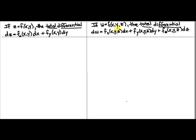If it's a three-variable function, it's very much the same. We define the total differential to be dw, and then we have three terms: the partial derivative with respect to x times dx, plus the partial with respect to y times dy, plus the partial with respect to z times dz. Let's look at an example where we actually calculate these total differentials.